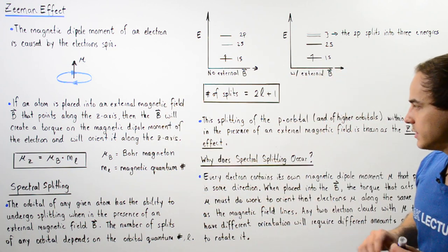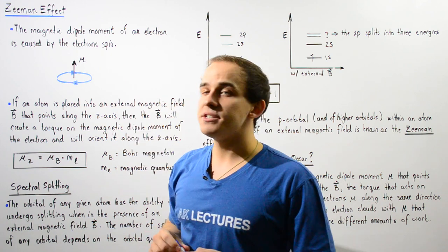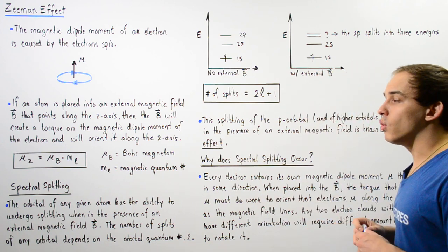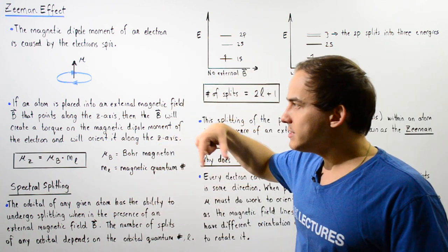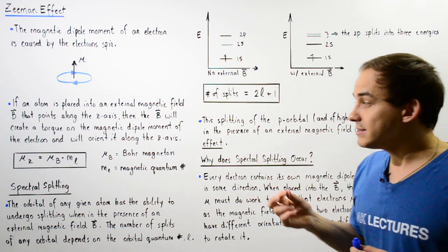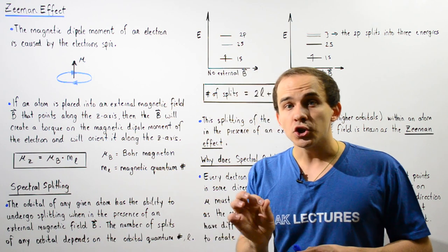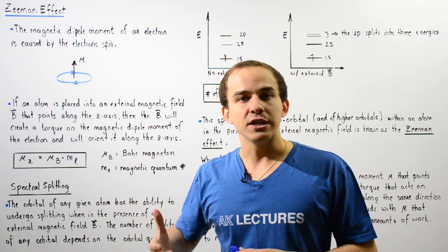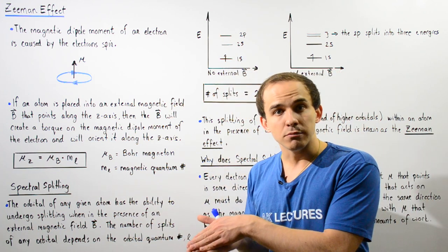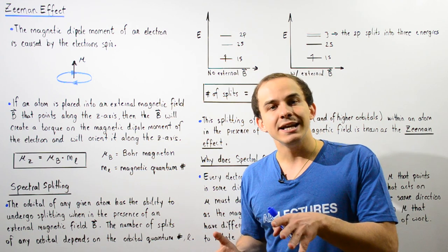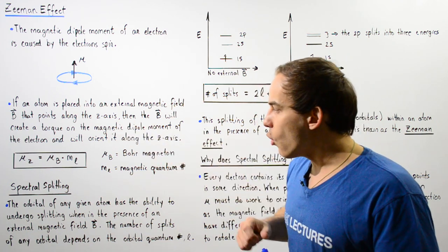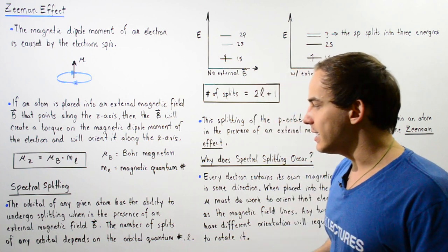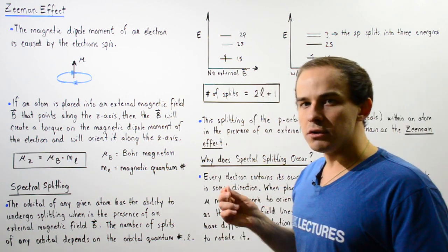This equation gives us the magnetic dipole moment of our electron using its magnetic quantum number. This will become important when we define the Zeeman effect. The Zeeman effect is caused by the magnetic dipole moment of the electron. If we take an atom and place it inside an external magnetic field B, certain orbitals of that atom will undergo something known as spectral splitting — the orbitals will split into different energy levels.